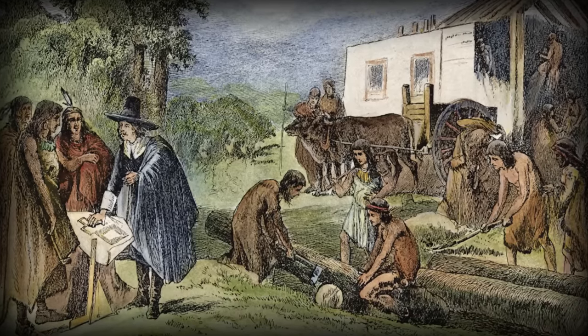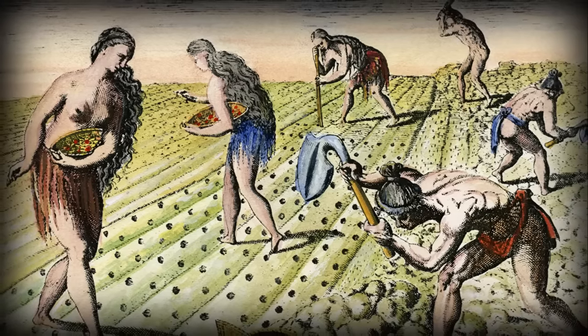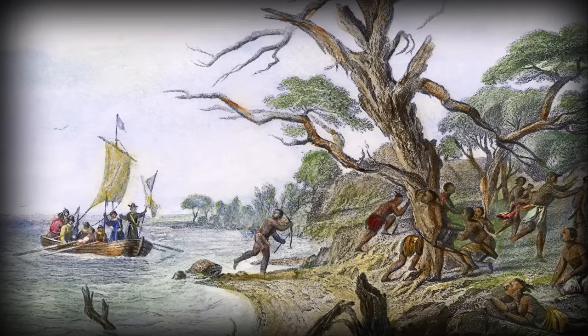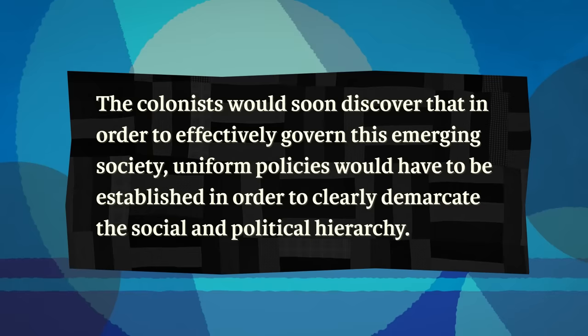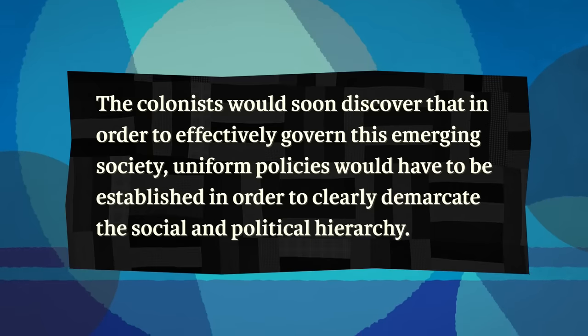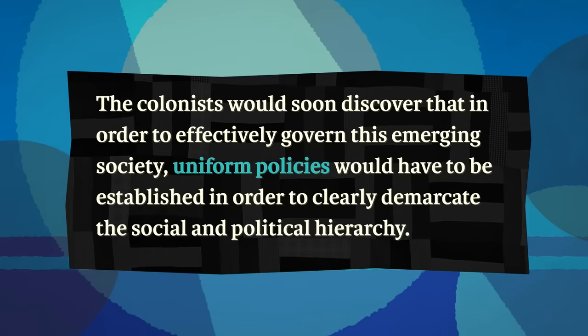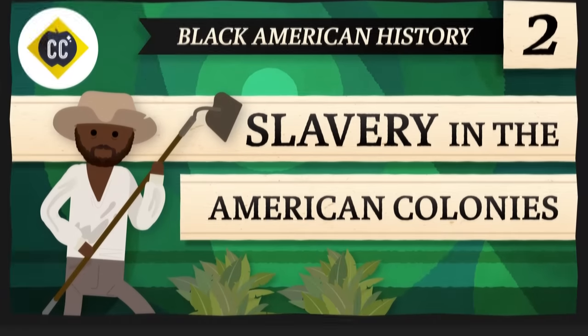The settlers also attempted to enslave indigenous people, but this didn't really satisfy their labor needs. And while Europeans did not immediately give up on indigenous labor, ongoing conflicts with Native Americans made imported Africans a much more desirable source of labor. Slavery, however, had not yet been defined and codified by law. But that wouldn't last. The colonists would soon discover that in order to effectively govern this emerging society, uniform policies would have to be established in order to clearly demarcate the social and political hierarchy. Before any legislation had passed to solidify the parameters of slavery as an institution, there were some allowances that enslaved men and women experienced that would be unfathomable just 20 years down the line. Anthony Johnson, a man who lived in captivity and who eventually worked his way out of bondage, illustrates some of the possibilities for Black people in Jamestown, Virginia, before blanketed restrictions were placed on them. Let's go to the Thought Bubble.